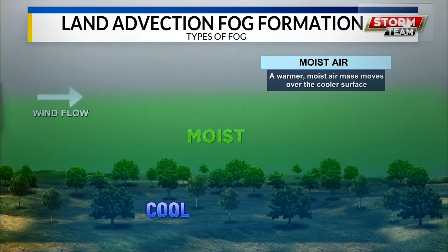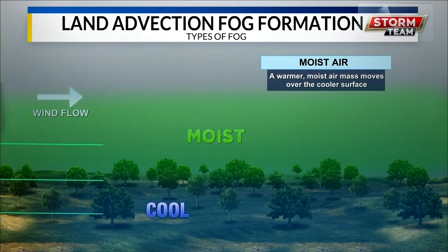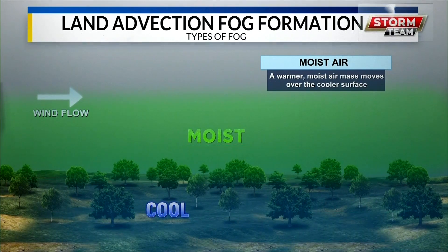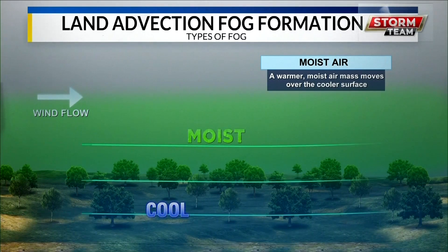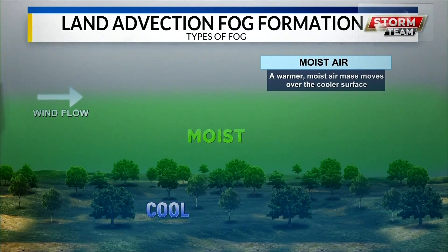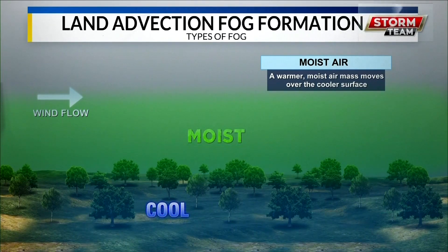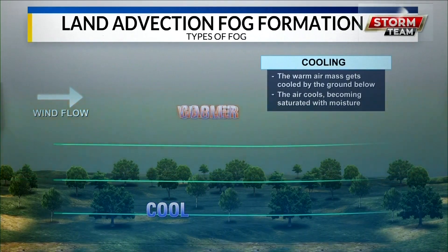Now the moist air — a warmer, moist air mass — moves over the cooler surface. That's represented there by the green. That's the moisture we have all the time here in western Colorado that shoots over the monument to the other edges and up by the edges of the Grand Mesa, missing us sometimes completely.